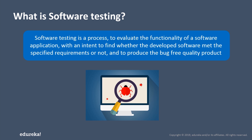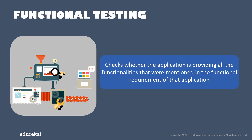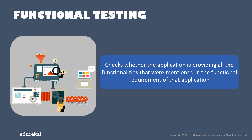Now let's take a look at the two major types of software testing: functional testing and non-functional testing. Functional testing is the type of software testing where the system is tested against all functional requirements or specifications, like technical details, data manipulation and processing, and other specific functionalities. Functional testing helps in testing a slice of functionality of the entire system.